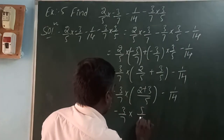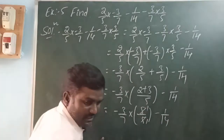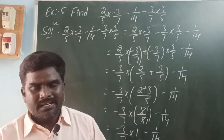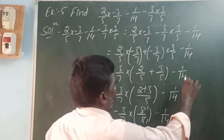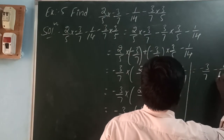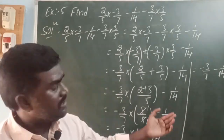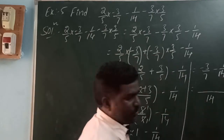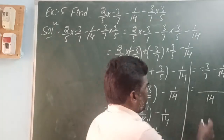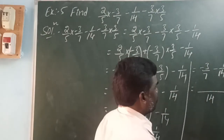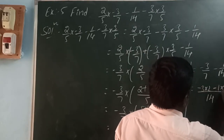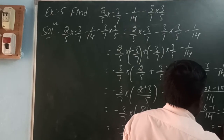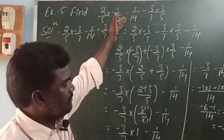So we have (-3/7) × 1 - 1/14. Any number multiplied by 1 remains the same — multiplicative identity property. So this becomes (-3/7) - 1/14. Now, 7 and 14 are both multiples of 7; LCM is 14. Multiply (-3) × 2 = -6, and -1 × 1 = -1: (-6 - 1)/14 = -7/14. Simplifying: 7 cancels, giving -1/2. So the value of this problem is -1/2.